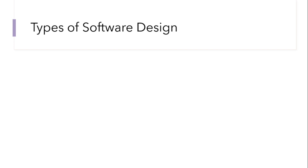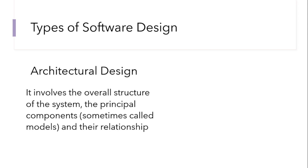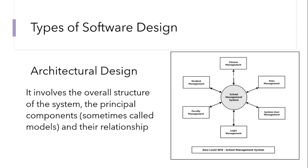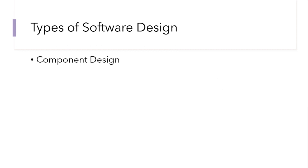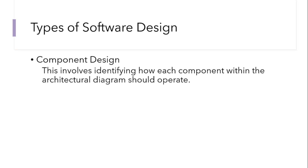The first type of software design is the architectural design. This involves the overall structure of the system, the principal components — sometimes called models — and their relationships. Taking a school management system as an example, components include classroom management, fees management, user management, login management, faculty management, and student management. Drawing out these components and their relationships is what we term the architectural design.